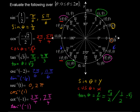For these inverse functions, you're looking for the value in radians — the angle which, when evaluated at sine, cosine, tangent, or so on, would give you the number in parentheses. That's how the inverse trigonometric functions work.